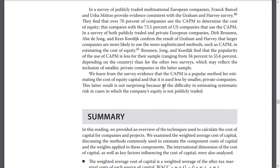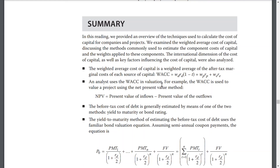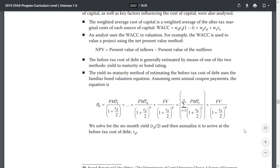Summary. In this reading, we provided an overview of the techniques used in calculating the cost of capital for companies and projects. We estimated the weighted average cost of capital, discussing the methods commonly used to estimate the components of cost of capital and the weights applied, the international dimensions of the cost of capital, and key factors influencing it. We also analyzed the weighted average after-tax marginal cost of each source of capital. The analyst uses the WACC in valuation — for example, to value a project using the net present value method where NPV equals the present value of inflows minus the present value of outflows. The before-tax cost of debt is generally estimated using yield to maturity or bond rating approaches.